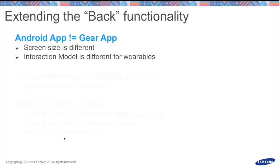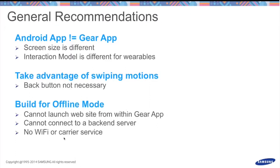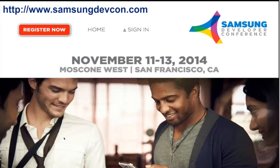Some general lessons learned from working with partners over the last 12 months: Gear apps are not Android apps and are not meant to be — the screen size and interaction model are completely different. Do not use a back button; it's not necessary and takes up valuable real estate on a small screen. Build for offline mode — it's a companion device, so all data comes through the phone; don't expect to pull data directly from a server. We also have a developer conference coming up November 11th through 13th — registration opened this week, see you in San Francisco at Moscone Center.